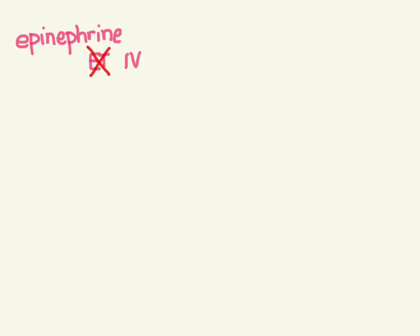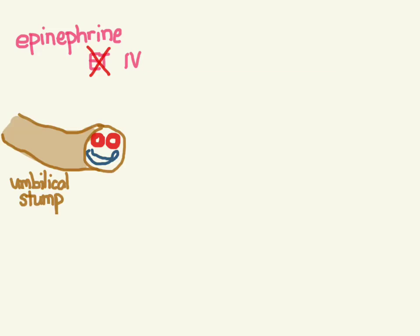To get IV access on these tiny babies, use the umbilical stump. In my picture the arteries are the thicker-walled vessels and the vein is the bigger, floppier one. Think of it as a smiley face — don't poke the eye, put the straw in the mouth. There are usually two arteries and one vein, though sometimes only one artery. Always cannulate the floppier, larger vessel.